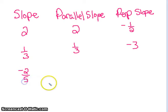Just real quick, two-fifths, negative two-fifths, parallel slope would be negative two-fifths, and the perpendicular would be positive five over two.